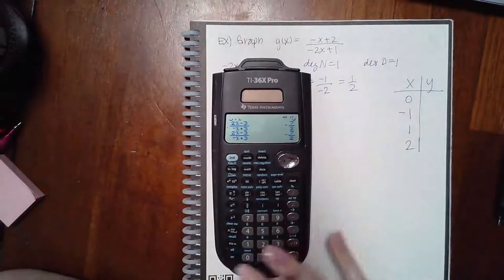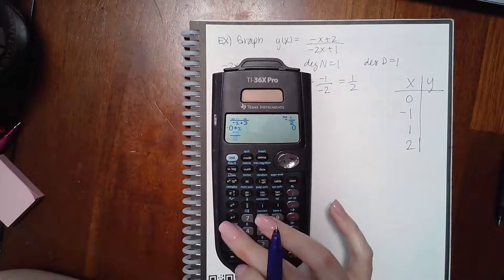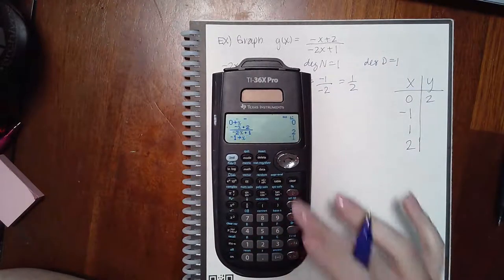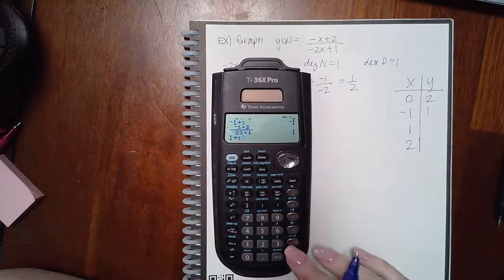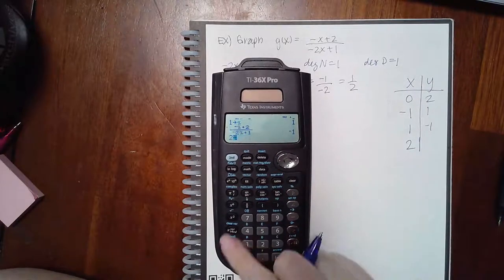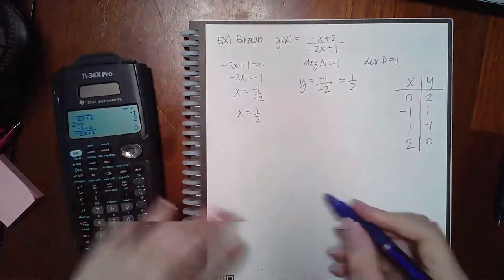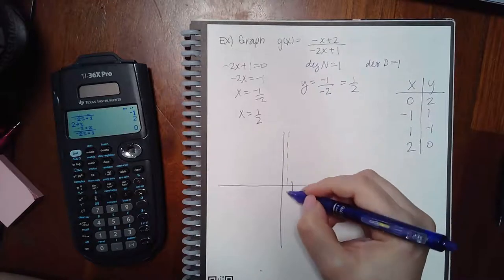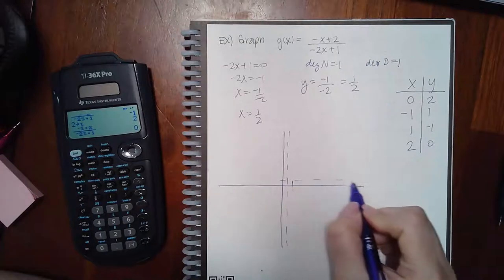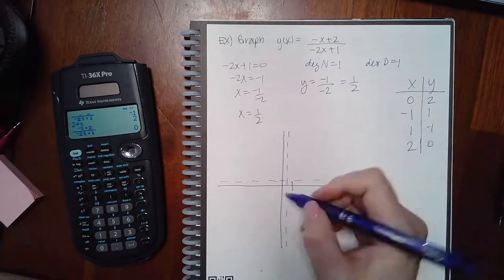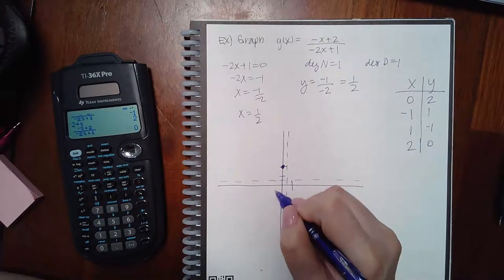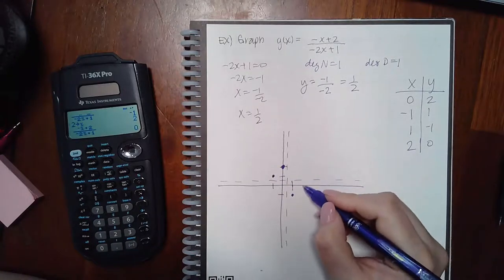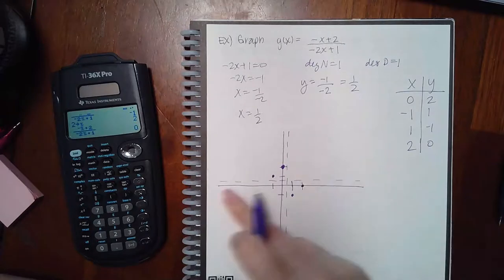Plugging into (−x+2)/(−2x+1): x = 0 gives 2, x = −1 gives positive one, x = 1 gives −1, and x = 2 gives zero. Graph it: the vertical asymptote is at x = 1/2, the horizontal asymptote at y = 1/2. Plot the points (0, 2), (−1, 1), (1, −1), (2, 0) and those lines plus dots are all you need — the software will draw the curve.